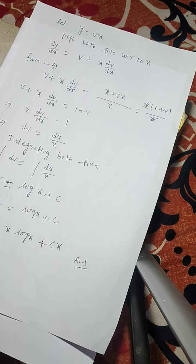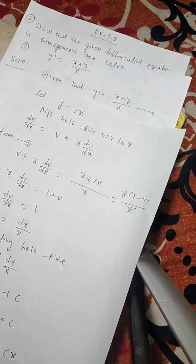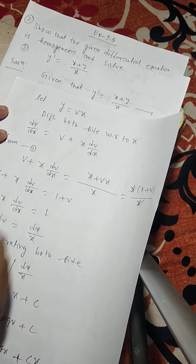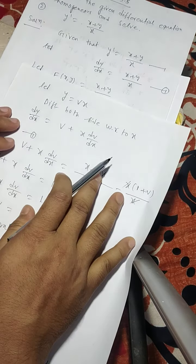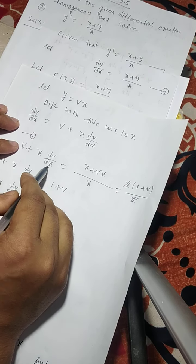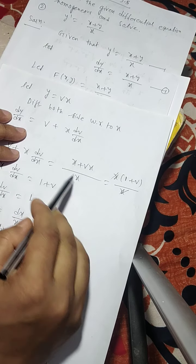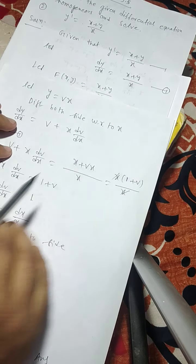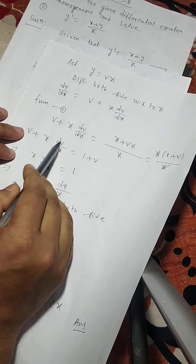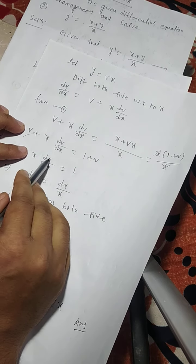Now let y equals to v·x. Differentiating both sides with respect to x gives dy/dx equals to v plus x·dv/dx. From equation number 1, we can write v + x·dv/dx equals to (x + y)/x, where y is replaced by vx. Here x is a common factor, so x·(1 + v) divided by x, and x cancels. We get v + x·dv/dx equals to 1 + v. Here v and v cancel, so x·dv/dx equals to 1.